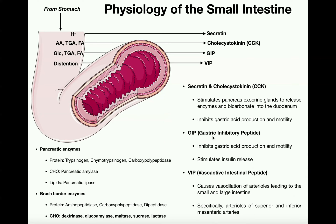In the previous video, we talked extensively about the anatomy and physiology of the small intestine. All we got into with the physiology is that the small intestine releases some hormones in response to food, as in chyme, entering from the stomach. We also talked about how the small intestine performs lots of chemical digestion and absorption.